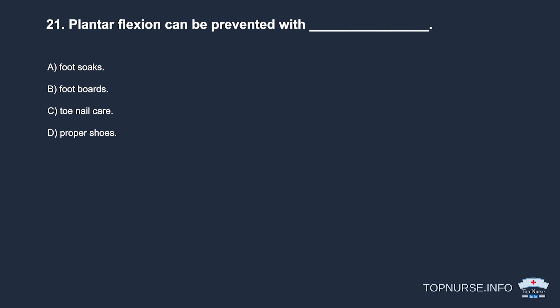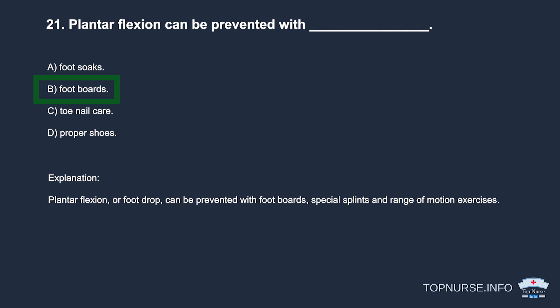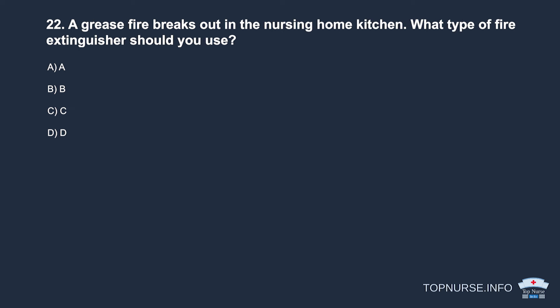Question 21: Plantar flexion can be prevented with: a. Foot soaks. b. Foot boards. c. Toenail care. d. Proper shoes. Correct answer: b. Foot boards. Plantar flexion, or foot drop, can be prevented with foot boards, special splints, and range of motion exercises.